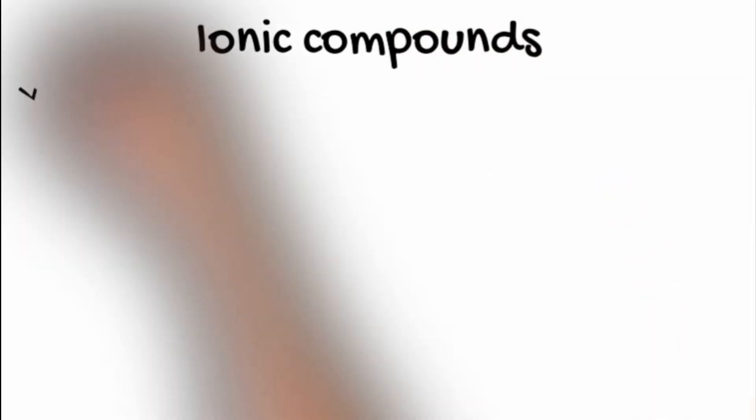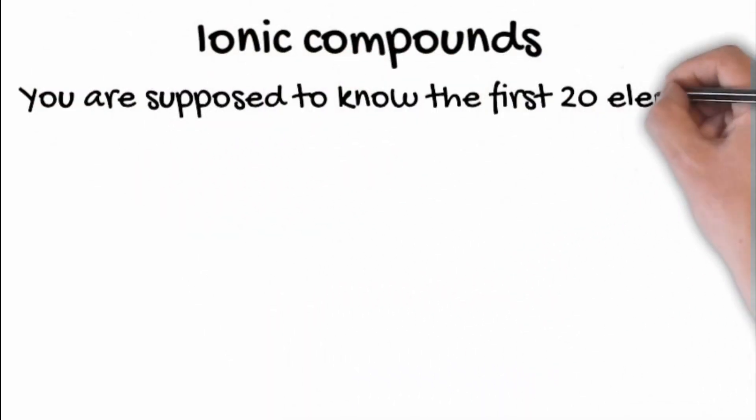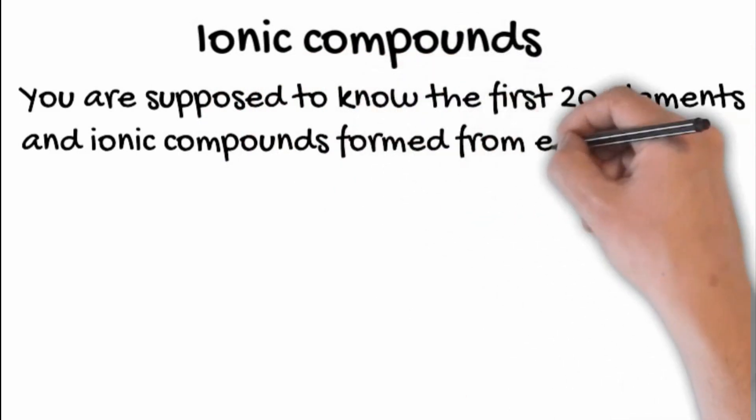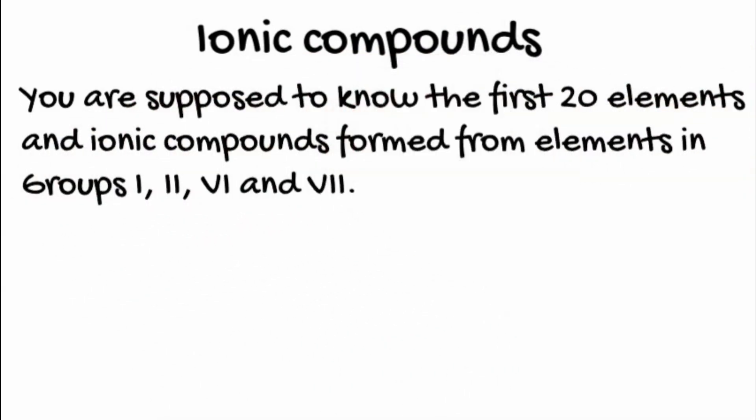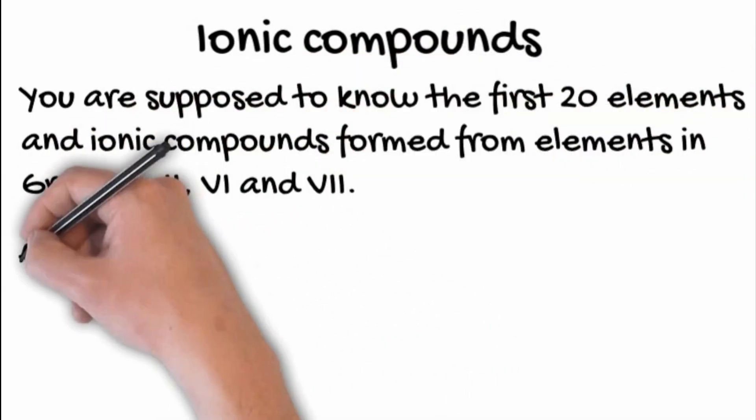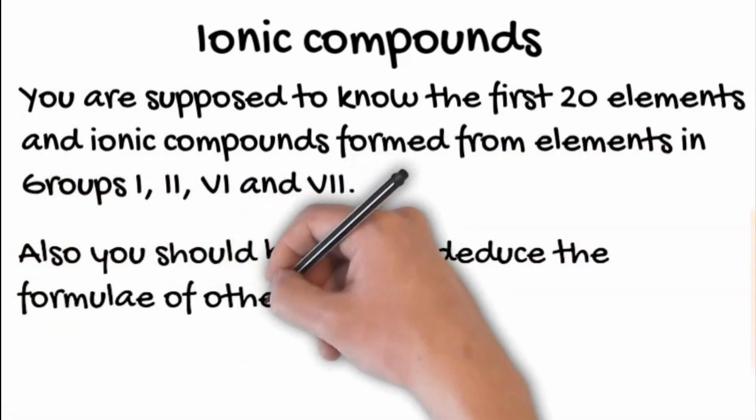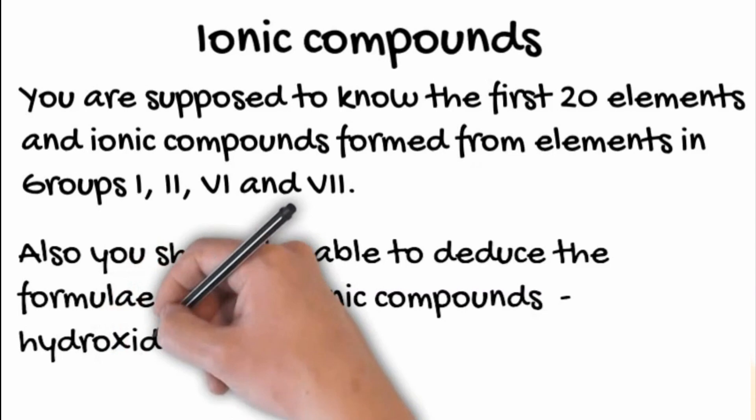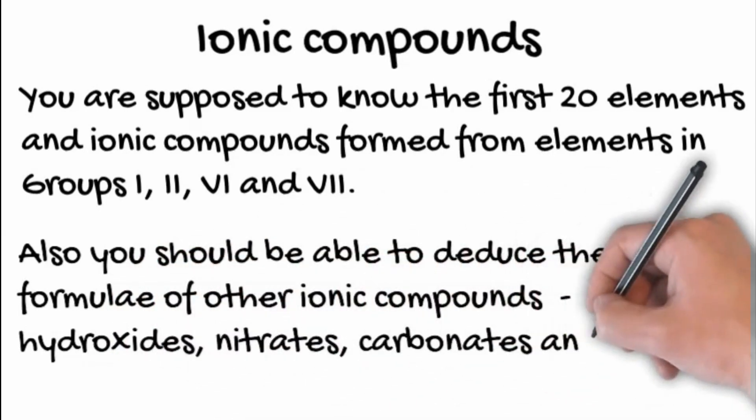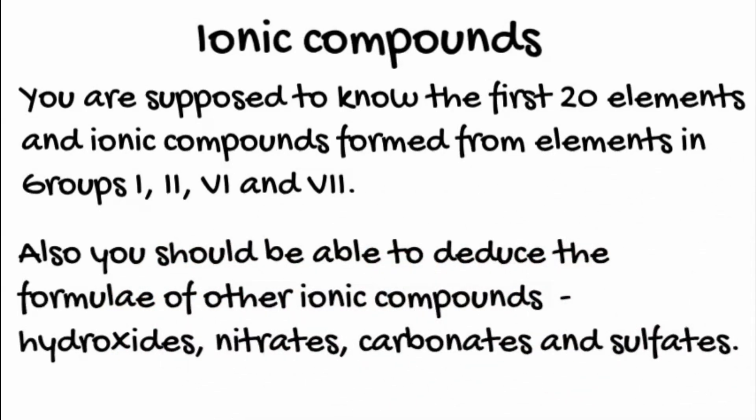You are supposed to be able to recall the first 20 elements of the periodic table. Ionic compounds form from elements in groups 1, 2, 6, and 7. You should be able to deduce the formula of other ionic compounds including hydroxides, nitrates, carbonates, and sulfates.